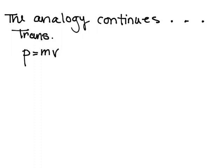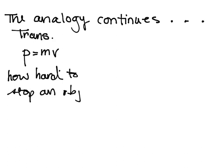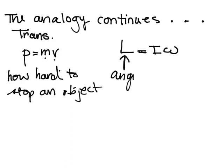The idea behind normal momentum is it's how hard it is to stop an object. If we want the angular quantity, we're going to replace m with I and replace v with omega. So angular momentum is equal to I times omega, and the symbol for angular momentum is L — always a capital L.